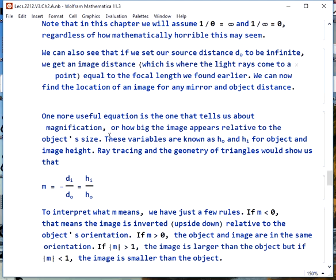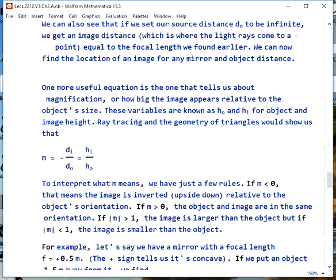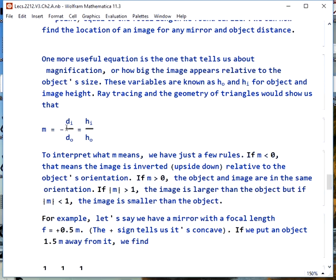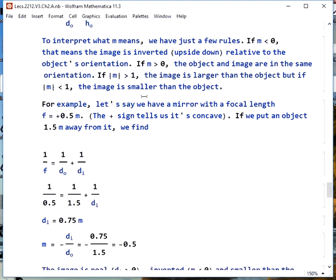There's one more useful equation, and that tells us about magnification, or how big is the image compared to the object size. We can write this in terms of variables HO and HI for object and image height. If we use ray tracing and the geometry of triangles, we could figure out that the magnification is the negative of the image distance over the object distance, or equivalently, the image height over the object height. To interpret what that means, there are a couple of rules. If the magnification is less than 0, we would say the image is inverted relative to the object. If the magnification is greater than 0, the object and image are in the same orientation. If the absolute value of M is greater than 1, that means the image is larger than the object. If the absolute value of M is less than 1, the image is smaller than the object.